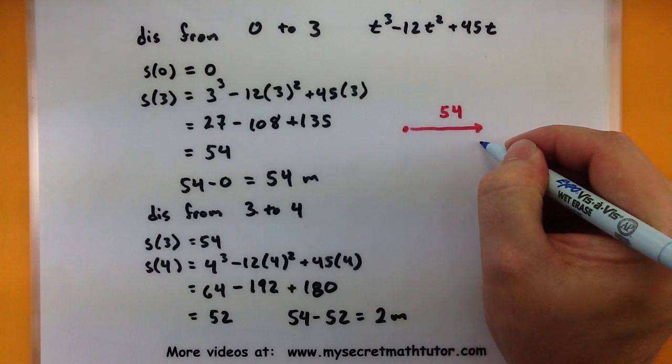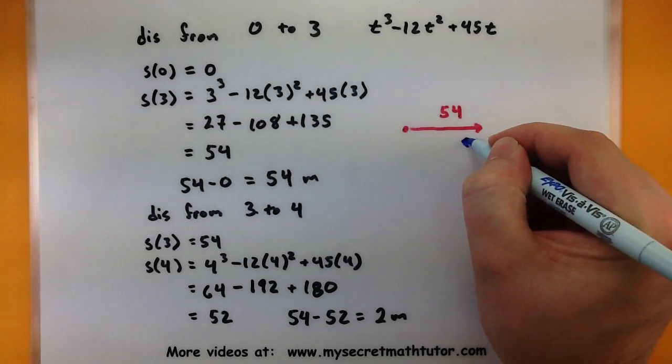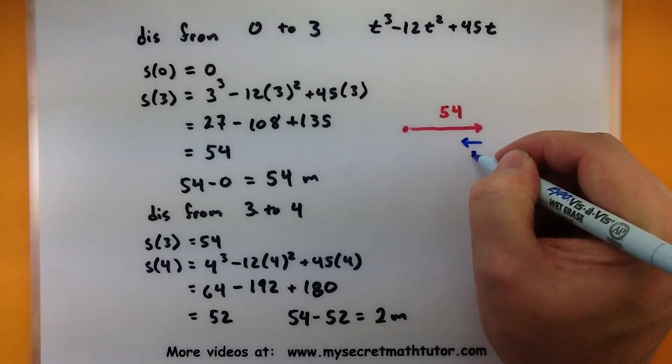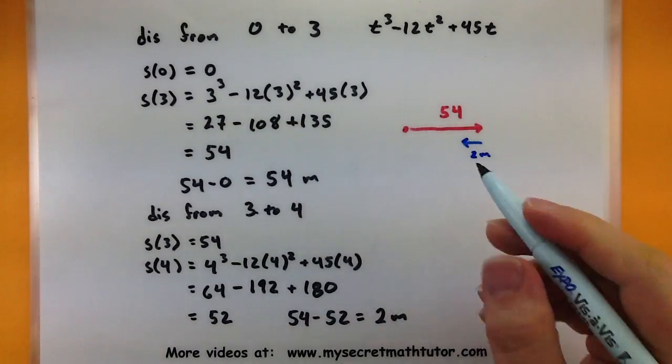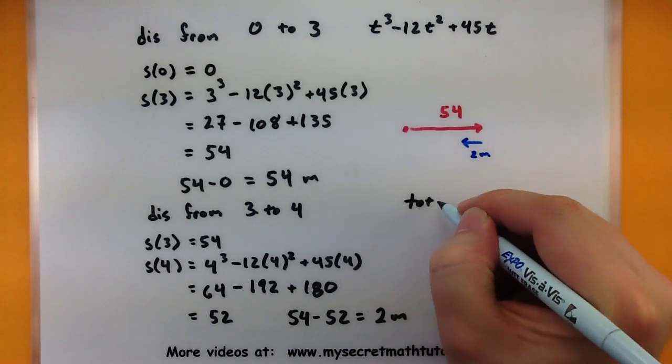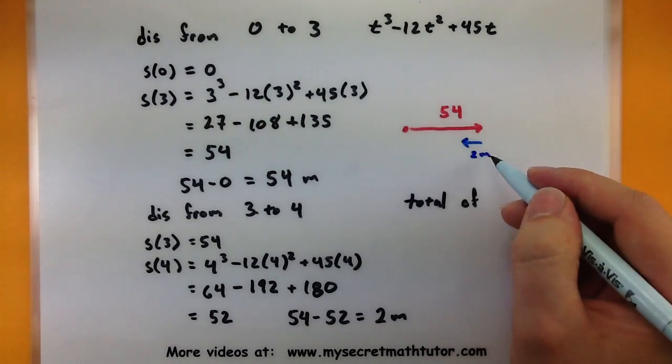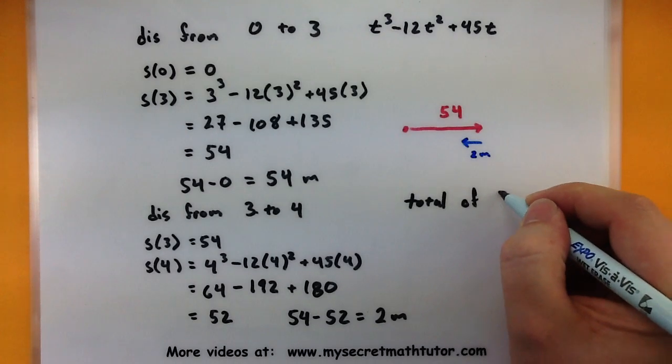Then from 3 seconds to 4 seconds, I know it turned around, it went the other direction, but it didn't go very far. It only went 2 meters the other direction. So I know that it went a total of 54 plus 2, or 56 meters.